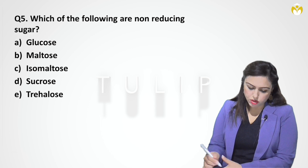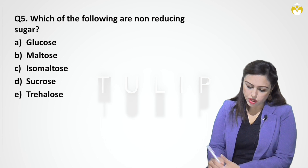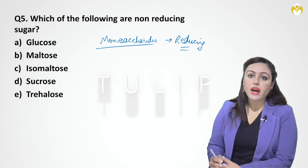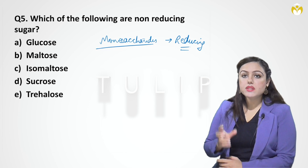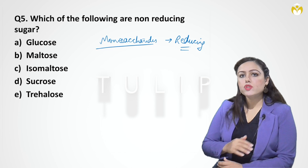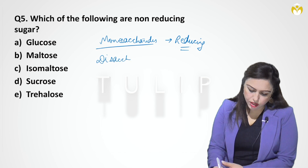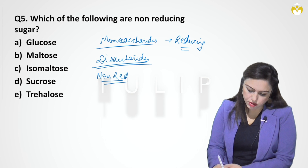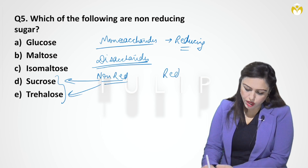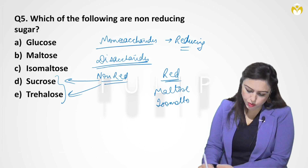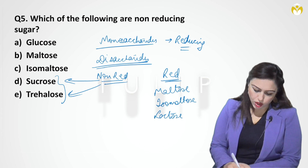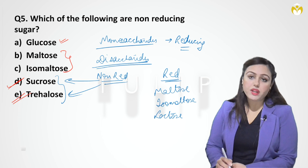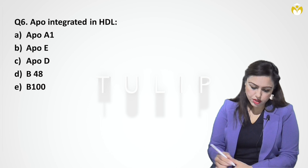Next question: which of the following is a non-reducing sugar — glucose, maltose, isomaltose, sucrose, or trehalose? All monosaccharides are reducing because their functional groups are free. Among disaccharides, the two non-reducing ones commonly asked are sucrose and trehalose. Reducing disaccharides include maltose, isomaltose, and lactose. Glucose is a monosaccharide and is reducing. The answer is sucrose and trehalose.